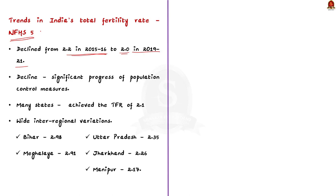A total fertility rate of 2.1 is considered the replacement level fertility rate at which population stability is achieved. In India, this replacement level fertility rate has been achieved by many states. However, according to the National Family Health Survey 5, there are wide inter-regional variations between the states.